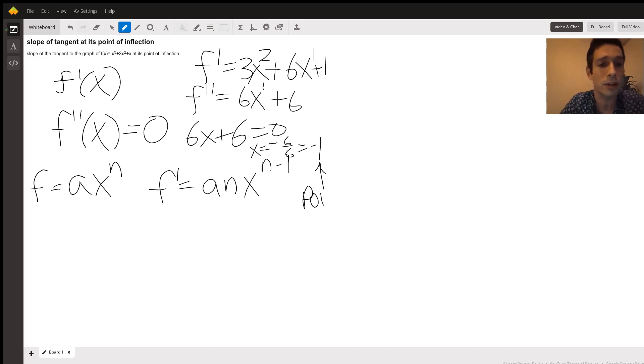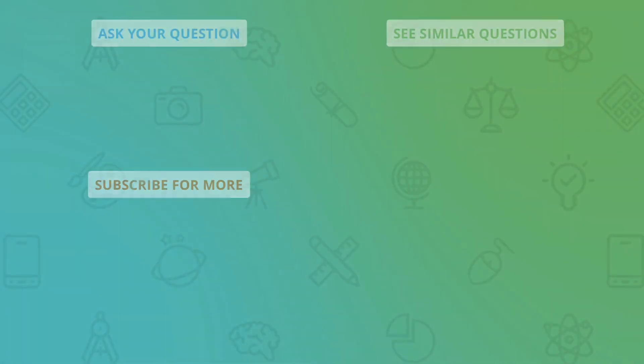I think from here you should be able to find the slope of the tangent because you can find the slope of the tangent anywhere by using the derivative. I hope that this helps you.